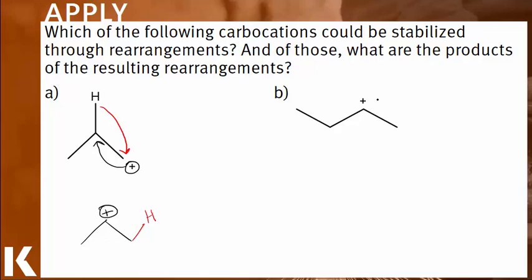Let's take a look at B. Here, the carbocation is bonded to two carbons, so we call this a secondary carbocation. This is certainly more stable than a primary carbocation. Is this the most stable carbocation, or can a rearrangement occur?